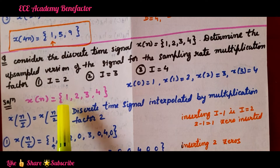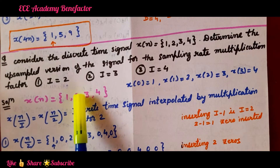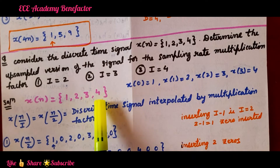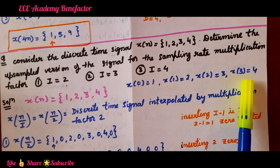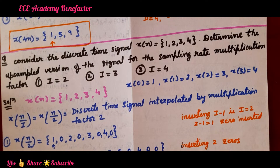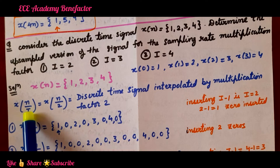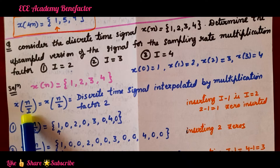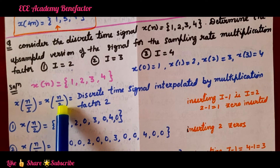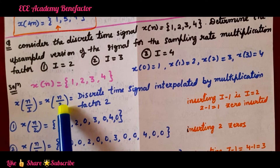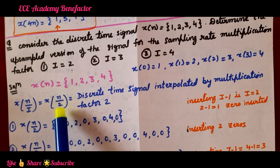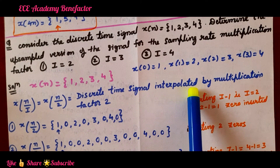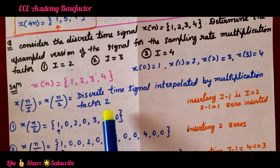From the given sequence, x(0) = 1, x(1) = 2, x(2) = 3, x(3) = 4. For the upsampled signal, the symbol is x(n/I). The first part is upsampled by 2, so I equals 2 and we find x(n/2). Its full name is: discrete time signal interpolated or upsampled by multiplication factor 2.